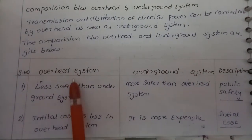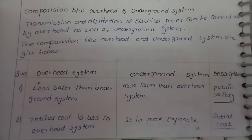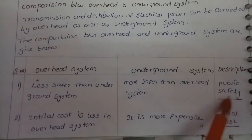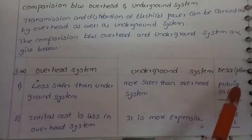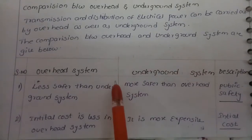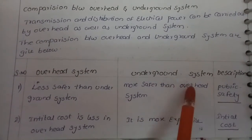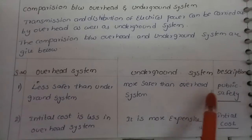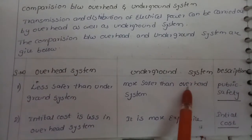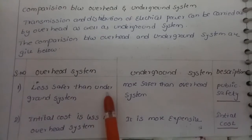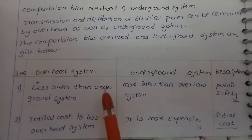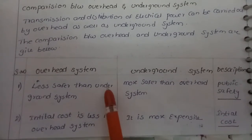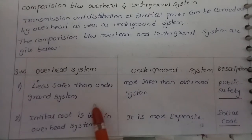The first aspect is public safety. Public safety is more in the underground system because all electric cables and distribution lines are placed as cables underground. Overhead systems are less safe because if an overhead line conductor falls down, it may cause electric shock.